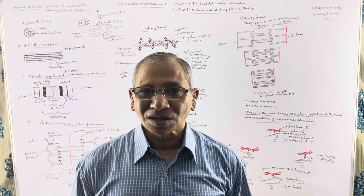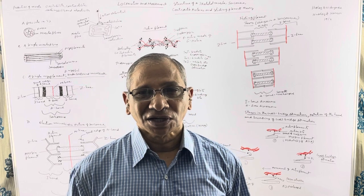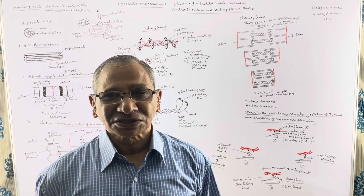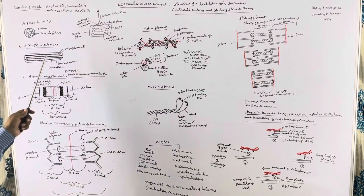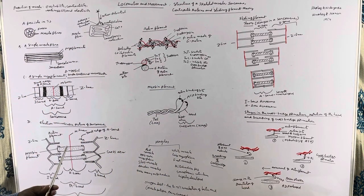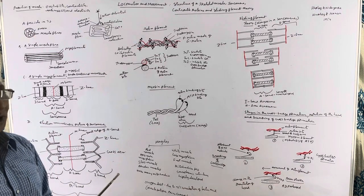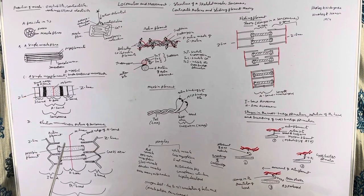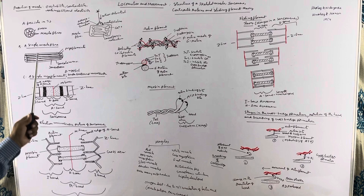The skeletal muscle is attached to the bones through tendons. A skeletal muscle is made of a number of fascicles. Each fascicle is made of a number of muscle fibers and is covered by a connective tissue sheath known as fascia.